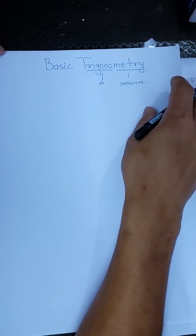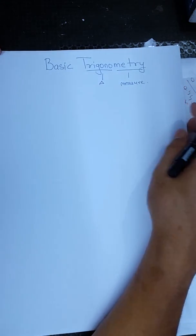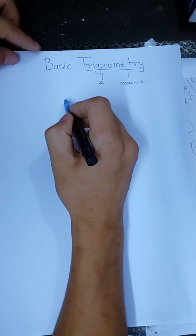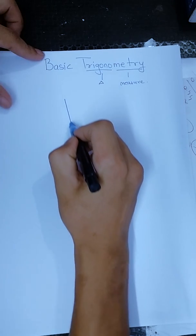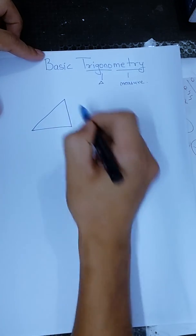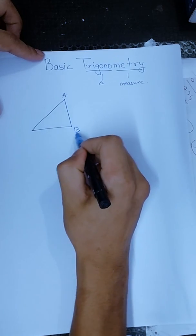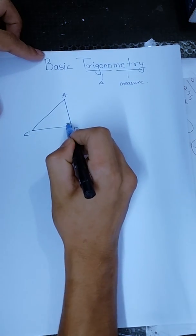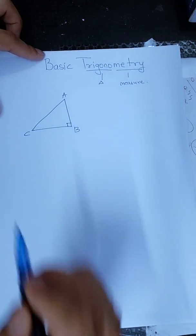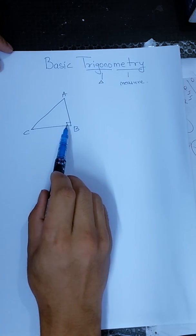If you try to make a right-angle triangle, you can use 90 degrees. The trigonometry will not switch with a trigonometry diagram. This is a trigonometry.